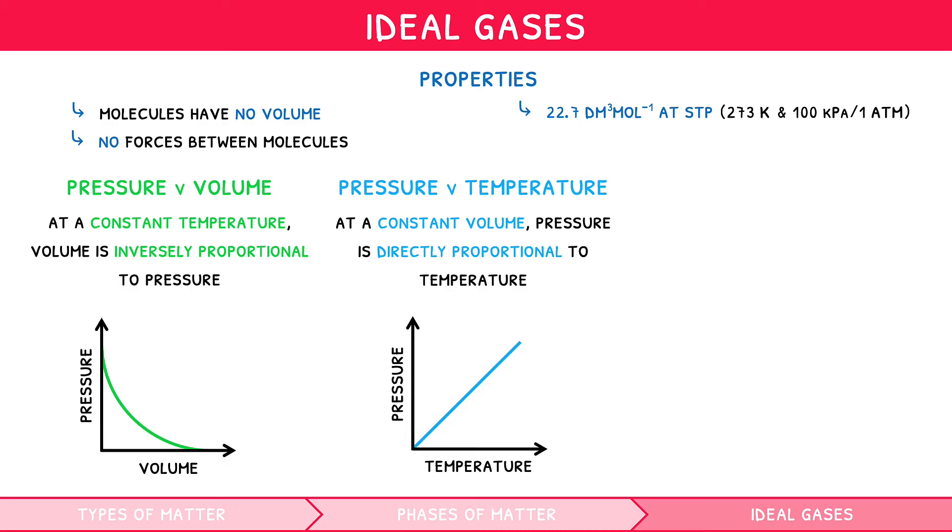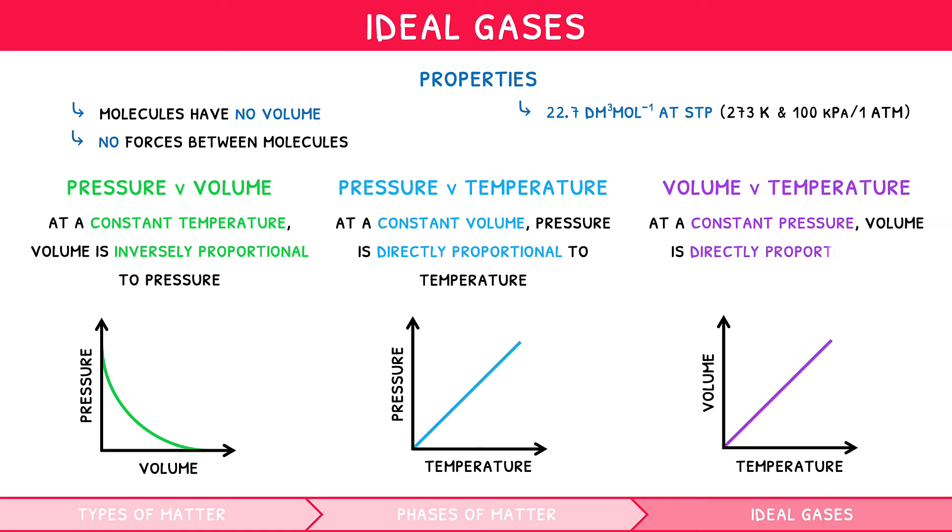The last relationship is volume versus temperature. A fixed mass of an ideal gas at a constant pressure has a volume directly proportional to its temperature in Kelvin, i.e. as temperature increases, volume will also increase. This is because as temperature increases, kinetic energy increases, which causes more collisions with the container, increasing the pressure.